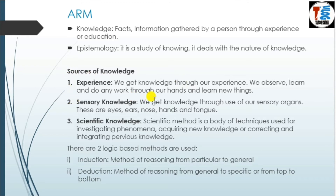Sensory knowledge is another form of gaining knowledge. We get knowledge through use of our sensory organs — these are ears, eyes, nose, hands, and tongue. These sensory organs give us knowledge about something happening, but not 100% or complete knowledge that can be used to make decisions.